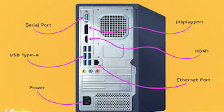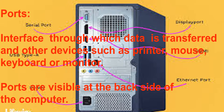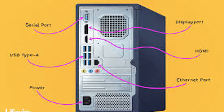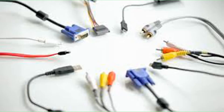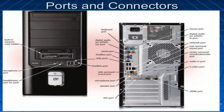Ports. A port is an interface through which data is transferred between a computer and other devices such as a printer, mouse, keyboard, or monitor. Ports are visible at the back side of the computer cabinet. These ports are used to plug in hardware. They are connected to expansion cards inside the cabinet, which are plugged into the motherboard and connected to other components by cables. All input and output devices plug into ports.